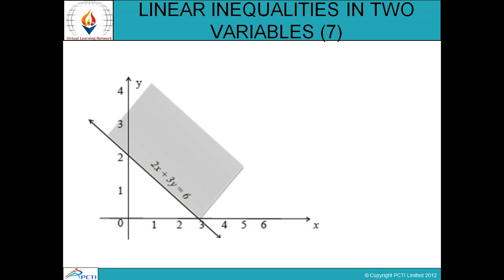As you can see in this figure, for the equation 2x plus 3y greater than or equal to 6, the graph is generated such that we shade the outside region. For the greater than or equal to inequality, we shade the outside region.